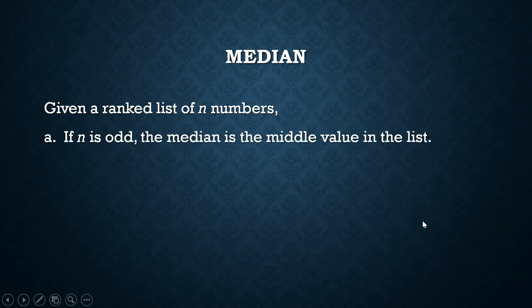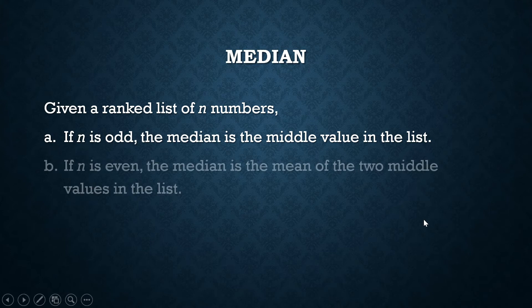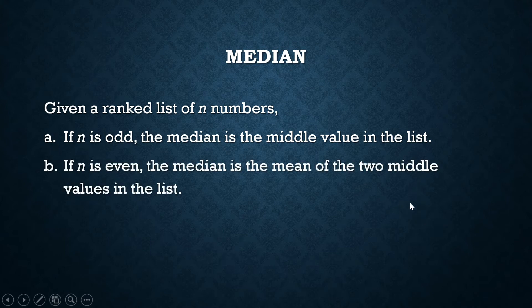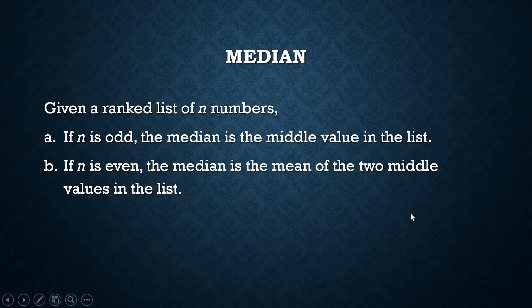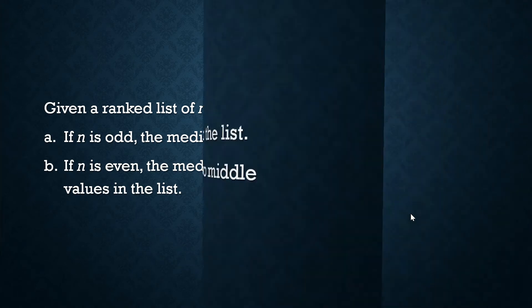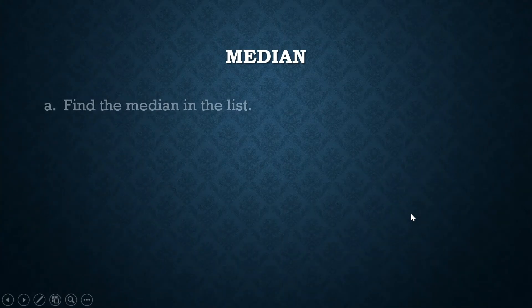If n is odd, the median is the middle value in the list. If n is even, the median is the mean of the two middle values in the list. Let us find the median of the following list.